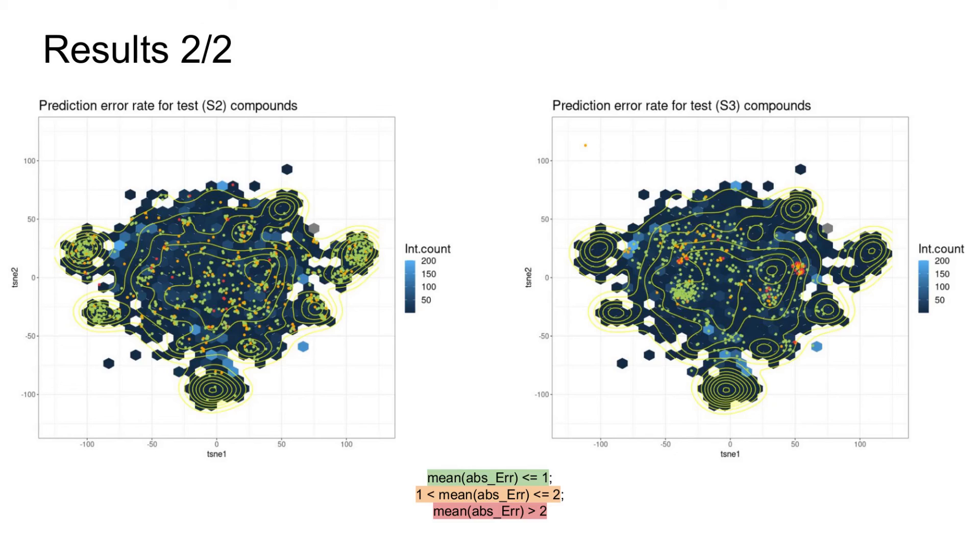On the left, we see the setting two test compounds color-coded in green, orange, and red, and cast over the training compound space. Those three levels were defined due to the fact that experimental bioactivity assays performed with different methods or by different labs can vary one to two units on average.